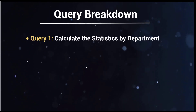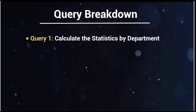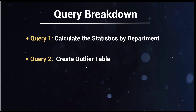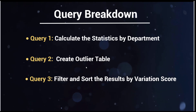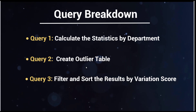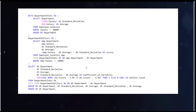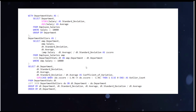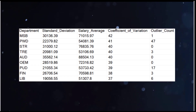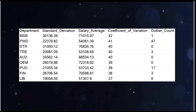We want to break this query down into three steps: calculate statistics by department, create an outlier table, and then filter and sort the results by variation score. This is what the query will look like in the end — it's a long query but I'll take you through it step by step. It will show off some skills and allow you to learn some fundamentals, and the final table will look something like this. Let's dive in.